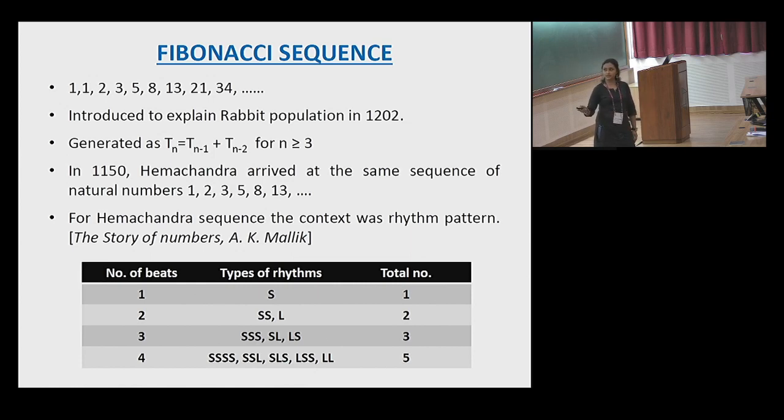Suppose I have a beat of one second duration. If I have two seconds of duration, I can have two short beats or one long beat of two second duration. For three, there are three patterns. For four, there are five patterns. In the same way, I can have the Fibonacci sequence here, what Hemachandra observed.